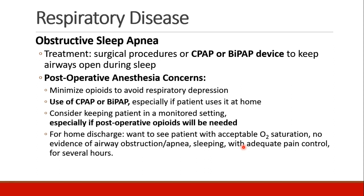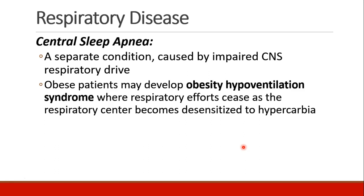Otherwise, they should probably be kept in the hospital where they can be monitored. There is another kind of sleep apnea called central sleep apnea. This is when your central nervous system's respiratory drive is impaired — it's not about soft tissue obstruction, it's about your brain not triggering breaths. Some obese patients can develop what's called obesity hypoventilation syndrome, where their brain stem, their respiratory center, stops making respiratory efforts because it's become desensitized to hypercarbia. There are other causes of central sleep apnea which we don't really need to go into in this course.